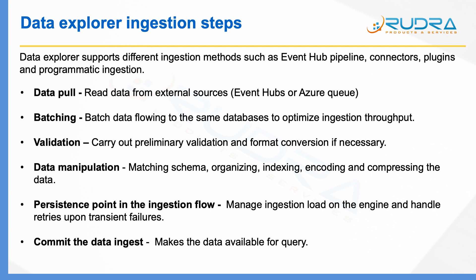The fourth step is data manipulation — you can specify where source fields should go in the destination, providing a mapping between source columns and destination columns. The fifth is a persistent point in the ingestion flow, which manages ingestion load on the engine and handles retries upon transient failures. If something fails, you can roll back and start again. Finally, the sixth step is committing the data ingest — once you have ingested the data, you make it available for queries.